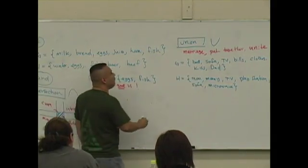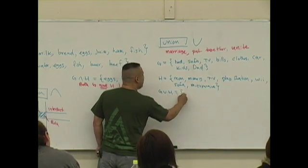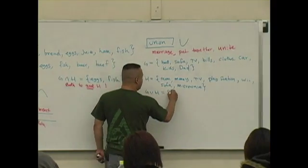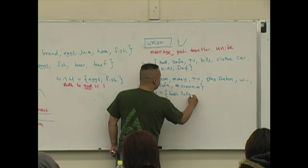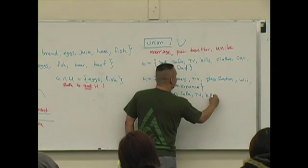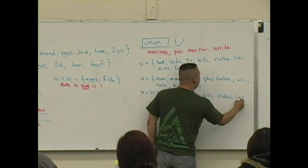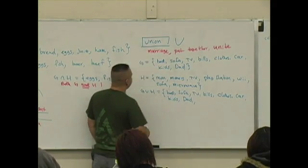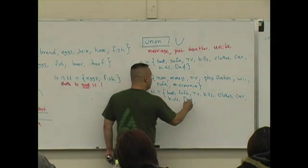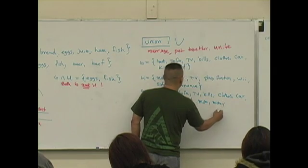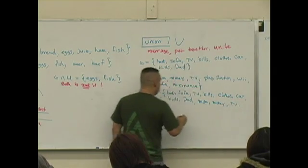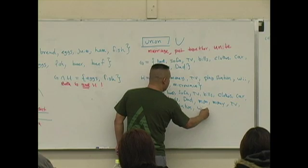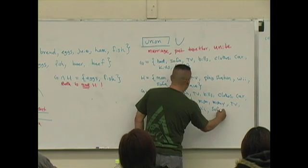So we're going to do this. We're going to form the union between G and H. Forming the union means what? Putting everything together. So start with what Gina has: a bed, sofa, television, bills, clothes, car, kids, dad. And Henry brings his what? Mom. He brings his money. He brings a television, PlayStation, the Wii, sofa.